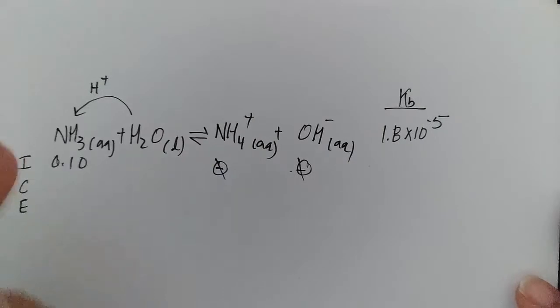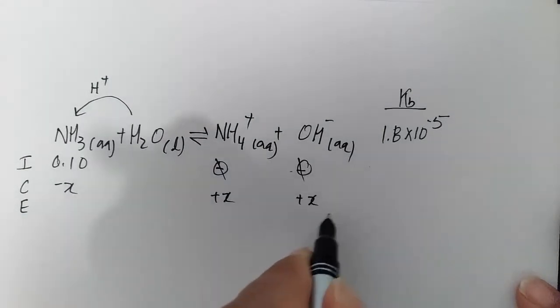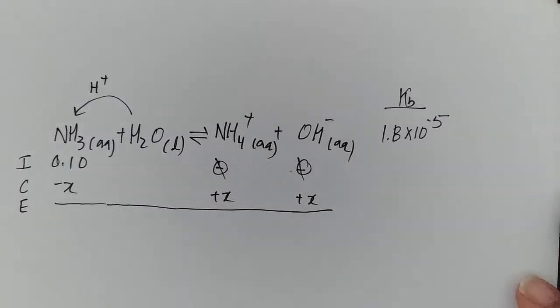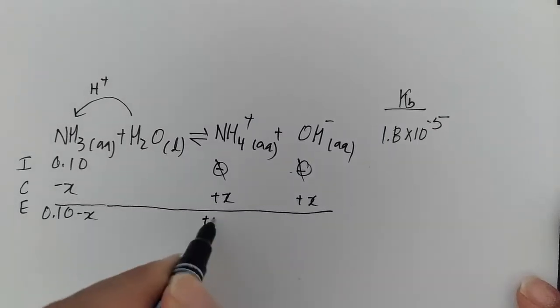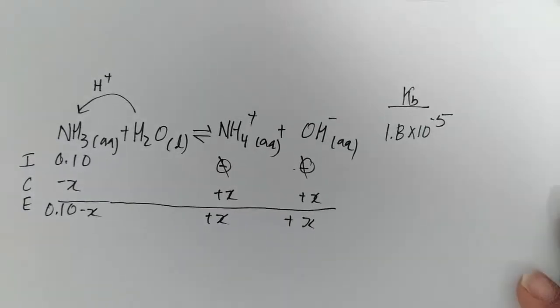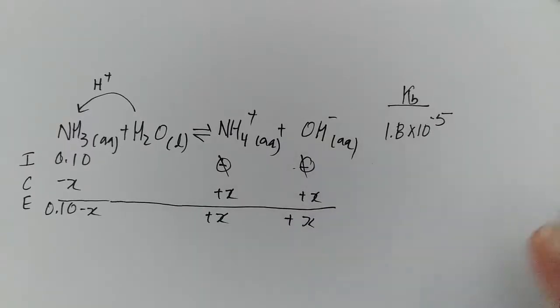Some of it's going to go in this direction. So that's going to be minus x, plus x, and plus x. At equilibrium when all is said and done with this reaction we will have 0.10 minus x, plus x, and plus x. So let's figure out our Kb value and our x value.